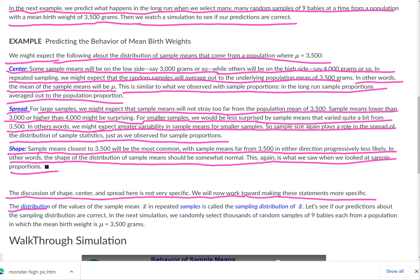The distribution of the values of the sample mean x̄ in repeated samples is called the sampling distribution of x̄, or the sampling distribution of the sample mean. Let's see if our predictions about the sampling distribution are correct.